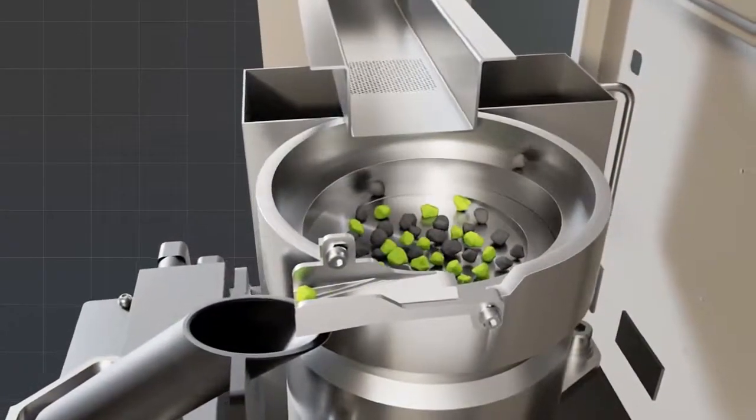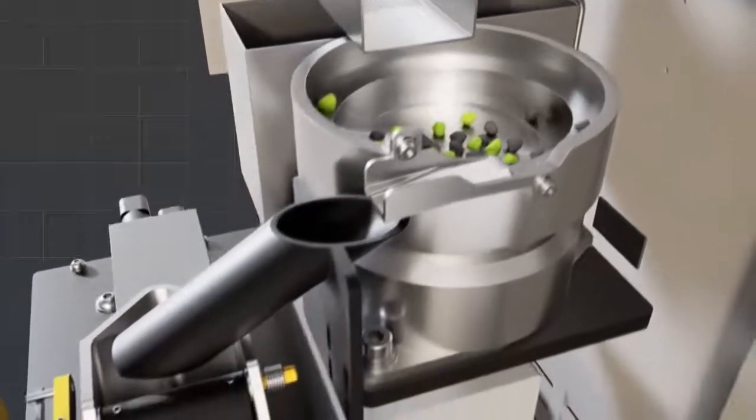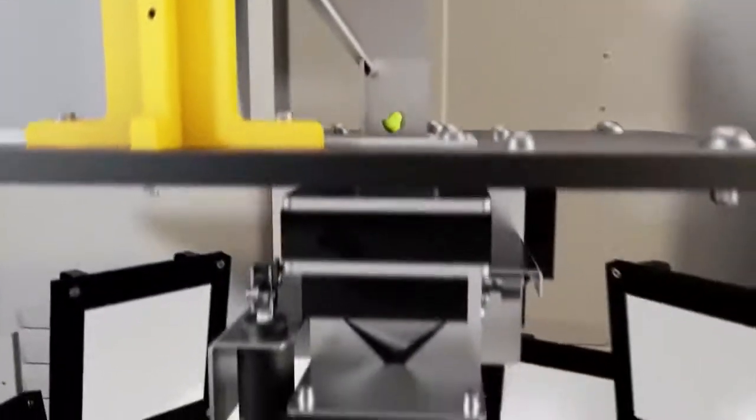A dual-feeding system presents the particles in a single file and feeds them to a highly accurate, auto-taring and fast scale which records and displays the mass in less than one second. After weighing,